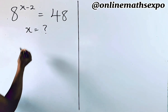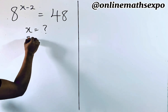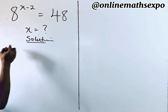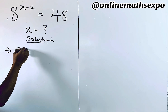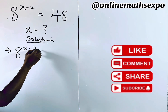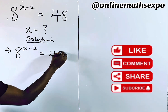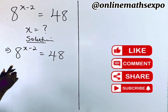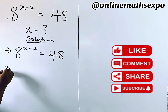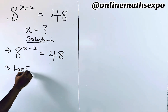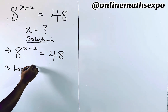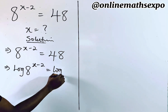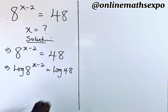We're going to begin with our solution. We have 8 to the power of x minus 2 is equal to 48. At this point, just quickly take the logarithm of both sides. So we take log of 8 to the power of x minus 2 is equal to log of 48.